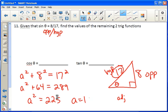Subtract 64 from both sides, and we're going to get A equals 15. So now we have all three sides, 8, 15, and 17. Cosine is the adjacent over the hypotenuse, and tangent is opposite over adjacent.